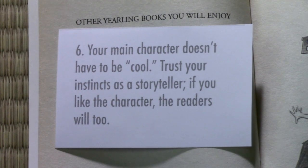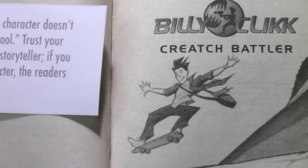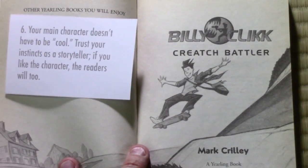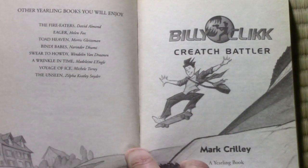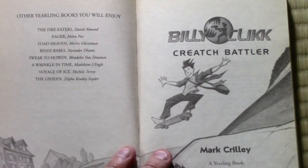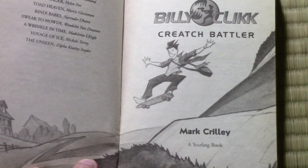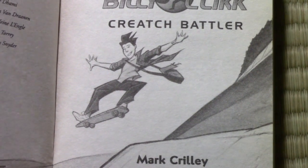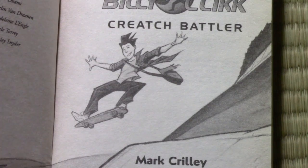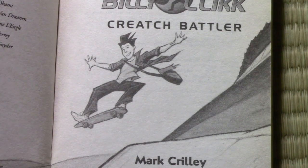Number six: your main character doesn't have to be cool. Trust your instincts as a storyteller — if you like the character, the readers will too. With Billy Clck, the editor and publisher pressured me to change the character into this sort of extreme-sports skateboarder, which was not what I originally wanted. Looking back, I regret having given in to that pressure, because I ended up with a character I myself couldn't identify with. You can't write a story about a character that someone else thinks is interesting — they've got to be interesting to you.